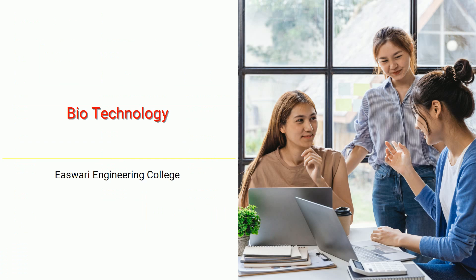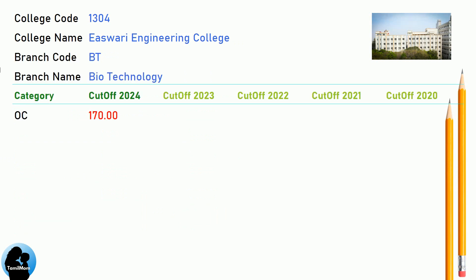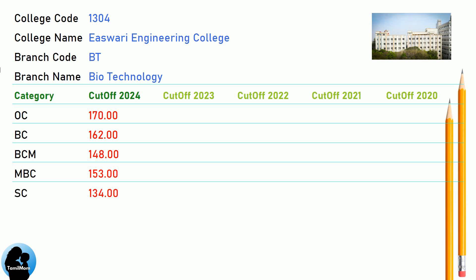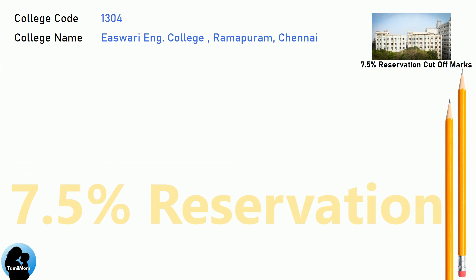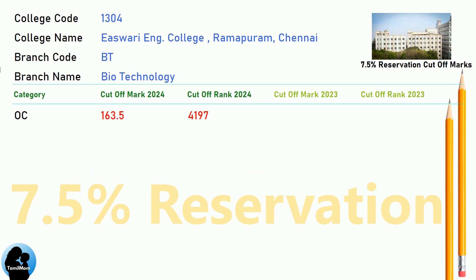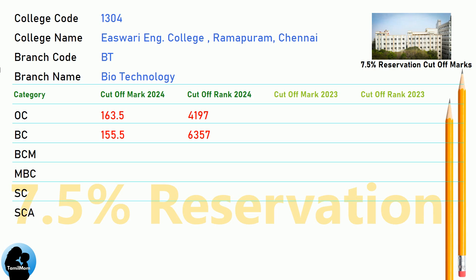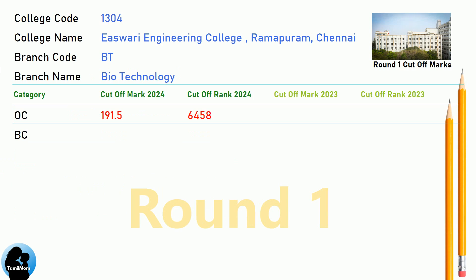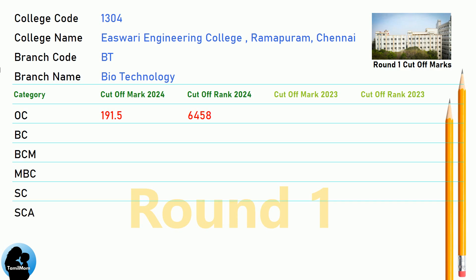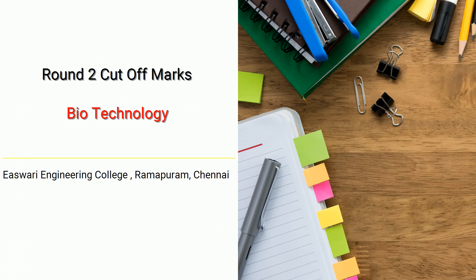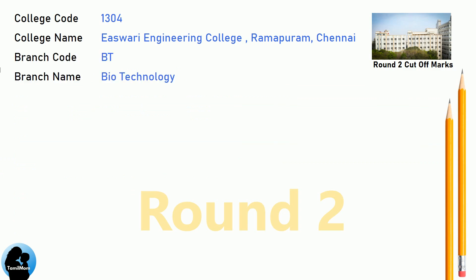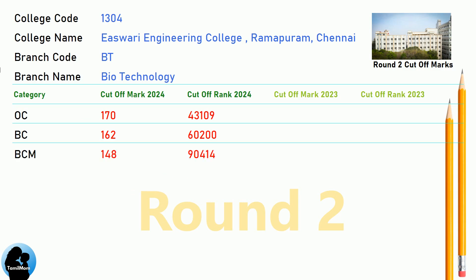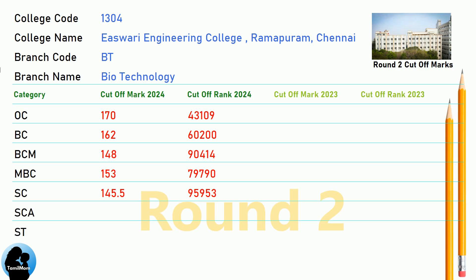DNA Cut-Off for Eshwari Engineering College in Biotechnology. DNA 7.5 Reservation Cut-Off for Eshwari Engineering College in Biotechnology. DNA Round 1 Cut-Off and DNA Round 2 Cut-Off for Eshwari Engineering College in Biotechnology.